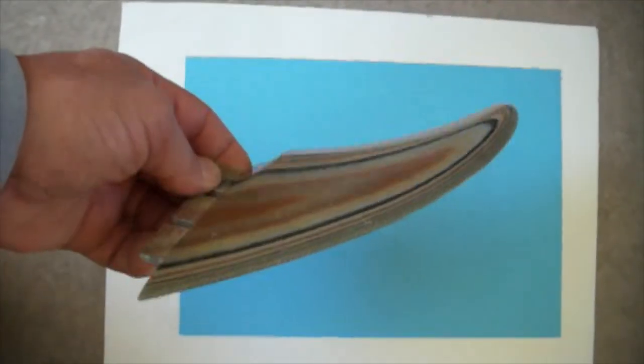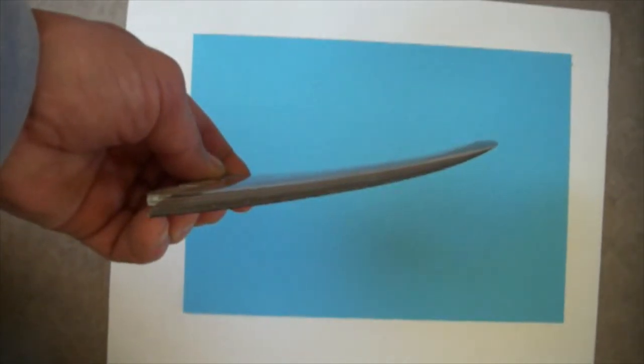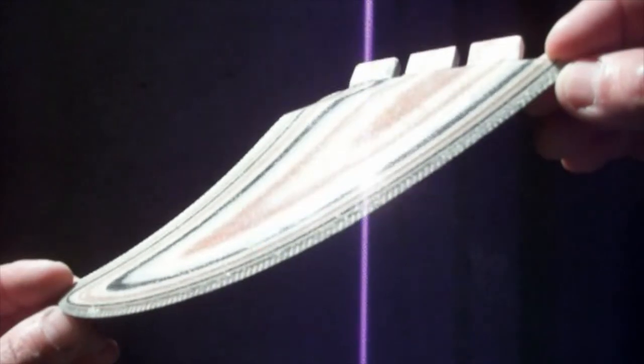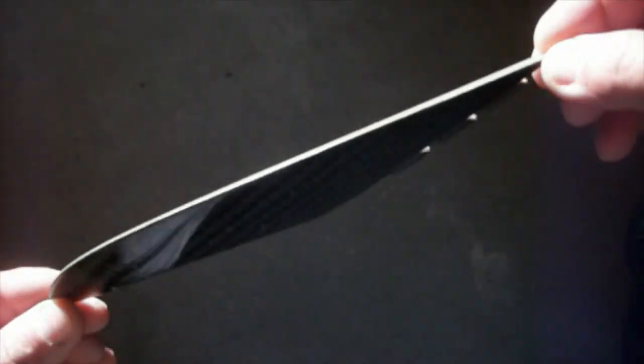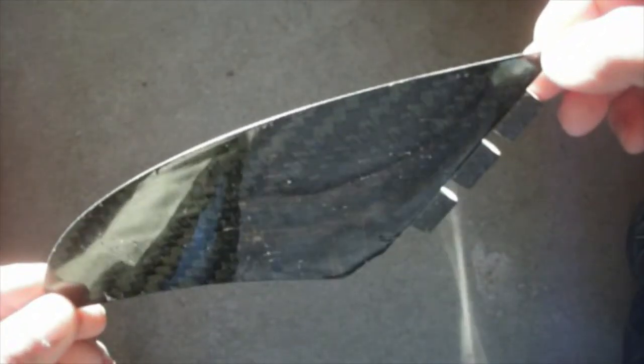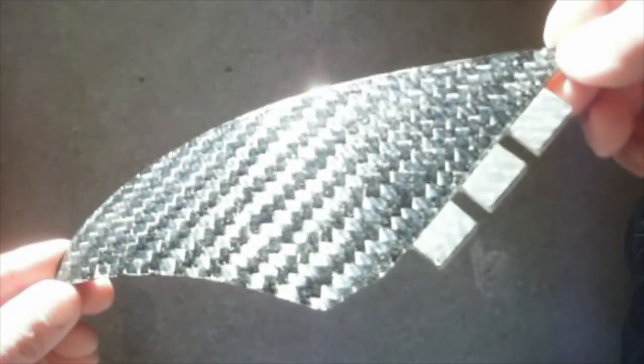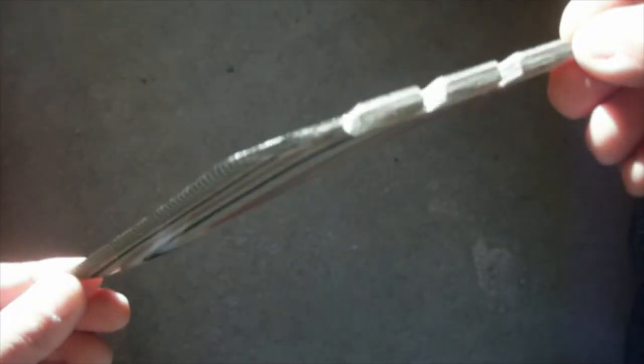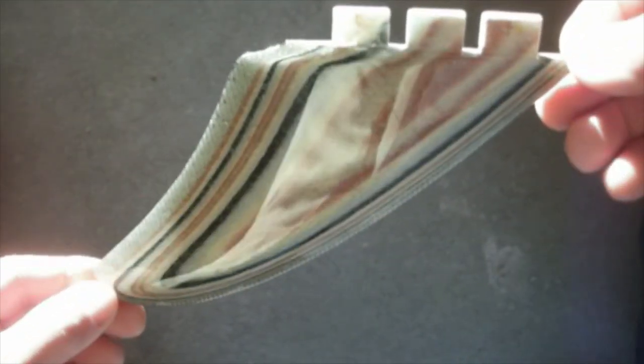This fin weighs about 84 grams, that's about 3 ounces. You can easily bring down the weight of this fin to about 2.5 ounces if you don't use paper layers and if you use less fibers.